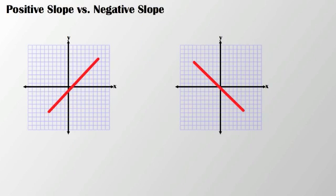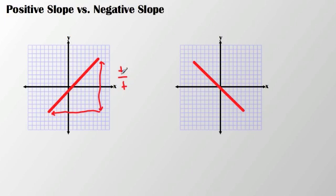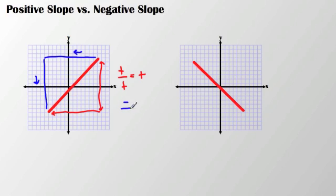There are different kinds of slopes. The first kind we're going to talk about is a positive slope. In a positive slope, both the value of the run and the value of the rise are indicated by positive numbers. So you have a positive divided by a positive, and that gives you a positive value. Also, if you look at rise over run going backwards and then down, you get a negative rise and a negative run — but a negative divided by a negative also gives you a positive.